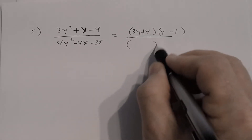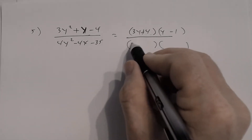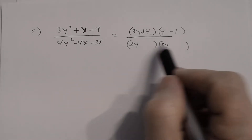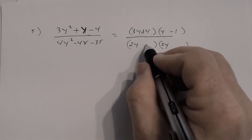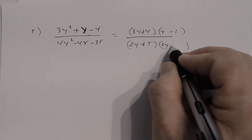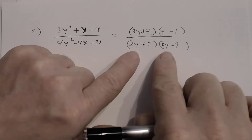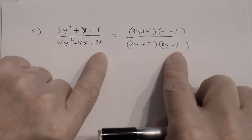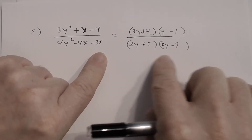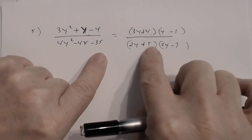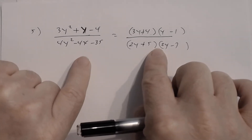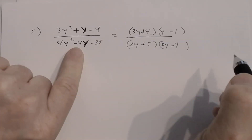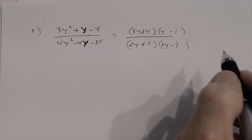For the denominator, try 2y and 2y. For 35, try 7 and 5 with different signs: +5 and −7. Double-check: 2y·2y = 4y², 5·(−7) = −35, outer 2y·(−7) = −14y, inner 2y·5 = +10y, sum = −4y. ✓ So the denominator factors as (2y + 5)(2y − 7).